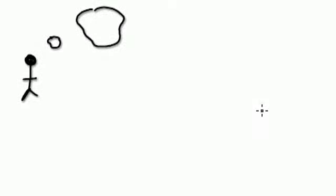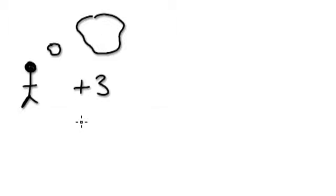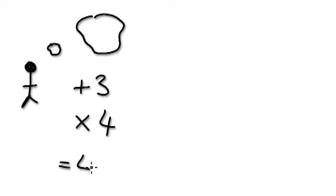I'm going to give you some more examples of this mind reading thing. So I'm thinking of a number. I'm going to add 3, and then I'm going to multiply it by 4, and it gives me 48.